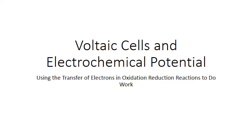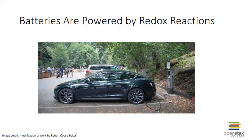In this PowerPoint, we're going to look at voltaic cells and how they use oxidation-reduction chemistry to produce an electrical current and do work. Batteries, like the ones that power this electric car, use redox reactions to produce electrical currents. They convert chemical energy into electrical energy through the use of voltaic electrochemical cells. Let's first look at the basic setup of an electrochemical cell and then talk about the cell potential that drives electrons from the anode to the cathode in a battery.